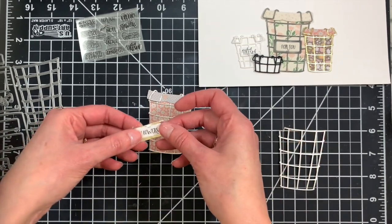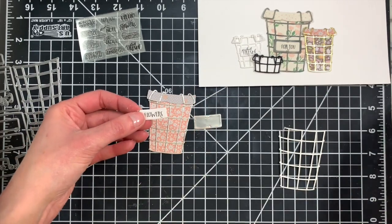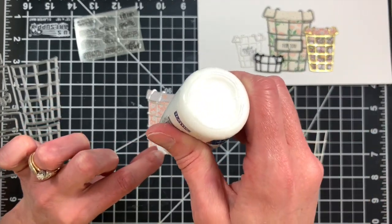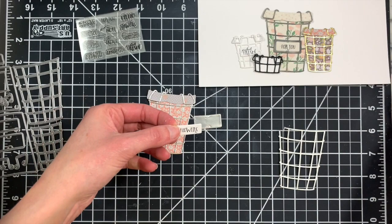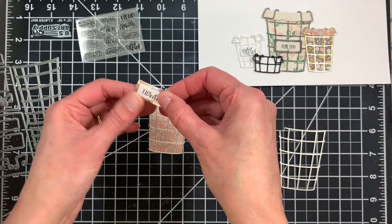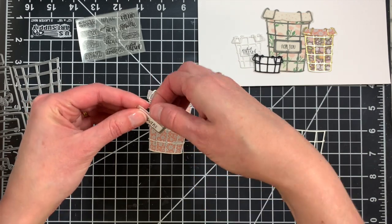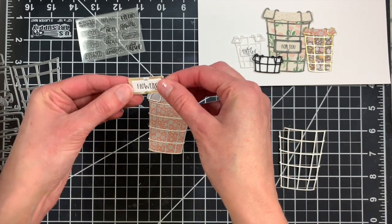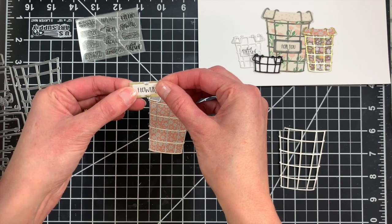I already have a sentiment stamped onto our little label here. I'm going to add some adhesive to that just to hold that in place. The little tabs are more of a decorative feature than an actual working detail to hold those in place. You are going to need a little adhesive to keep everything in place.